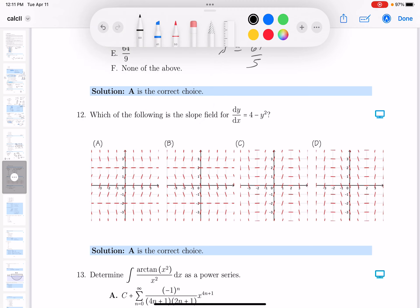So the way I would look at it, the derivative is 4 minus y squared. I'd factor it. I'd get 2 minus y, 2 plus y, and I'm analyzing the slope at this point.